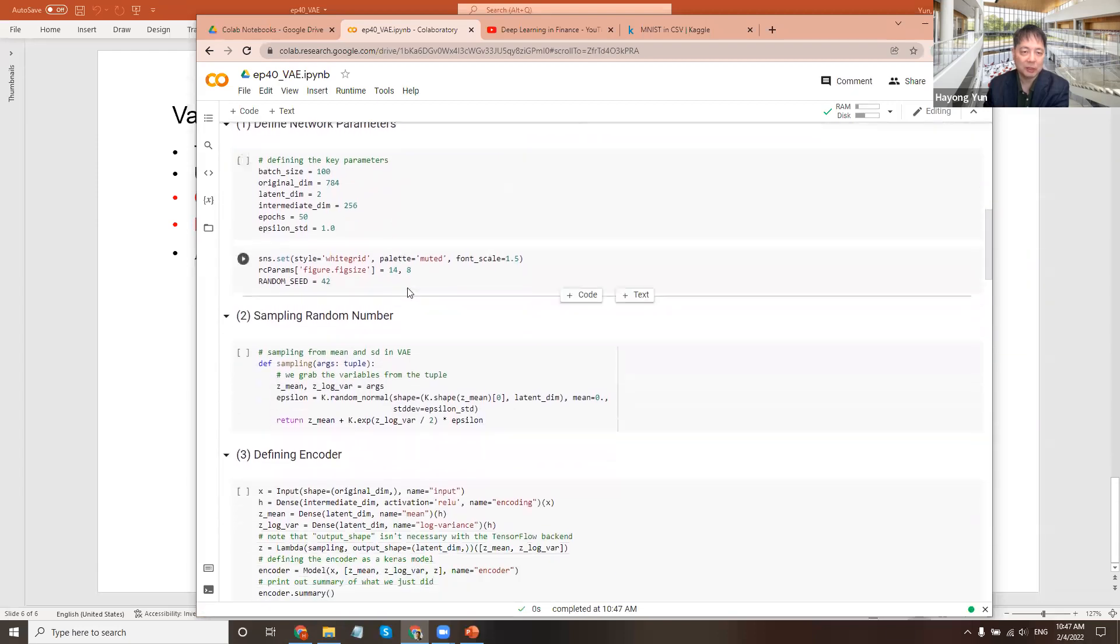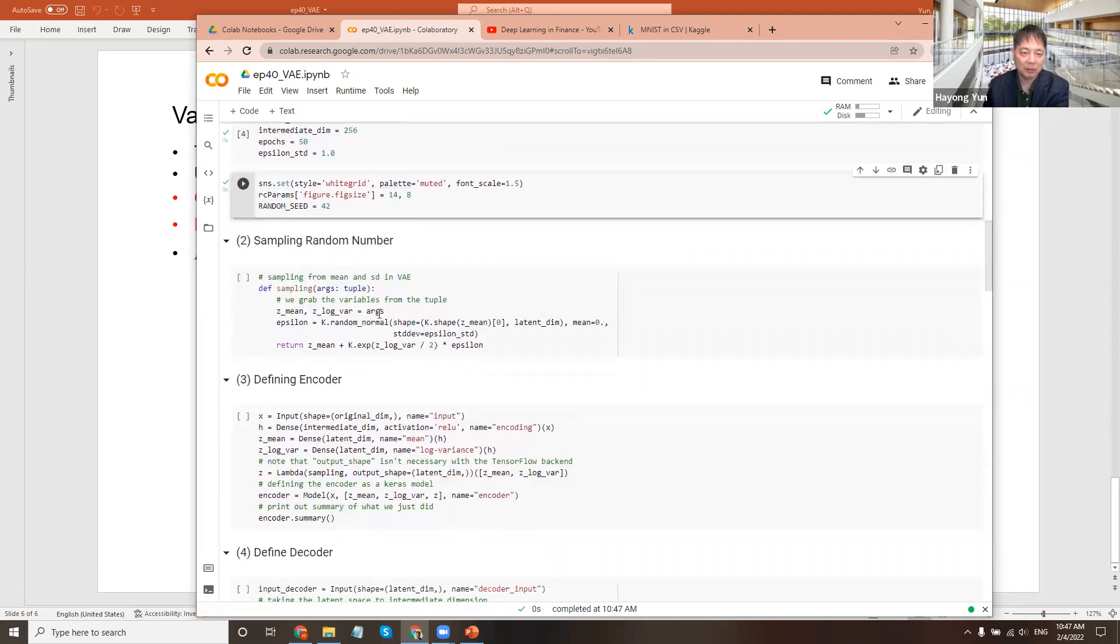So here is the new part. We have an original dimension 784. We're going to shrink it down to two dimensions. We have one intermediate dimension 256, and set the environment parameters.